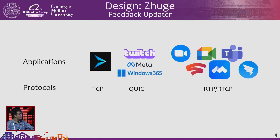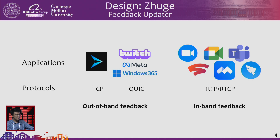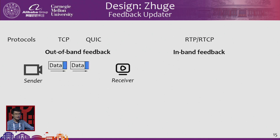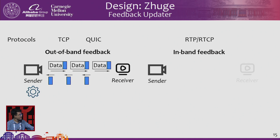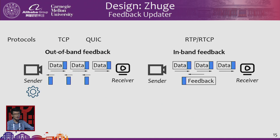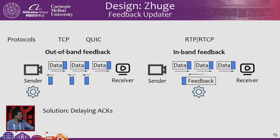For the feedback updater, we categorize feedback into two types: out-of-band feedback and in-band feedback. Out-of-band feedback means the feedback information is not in the payload — for example, in TCP, the sender reads ACK numbers and sequence numbers to infer round-trip time and network conditions. Our solution for out-of-band feedback is to delay ACK packets by carefully designed time intervals to carry congestion information back to the sender without modifying the sender — the sender interprets the intervals of ACK packets to understand network conditions.